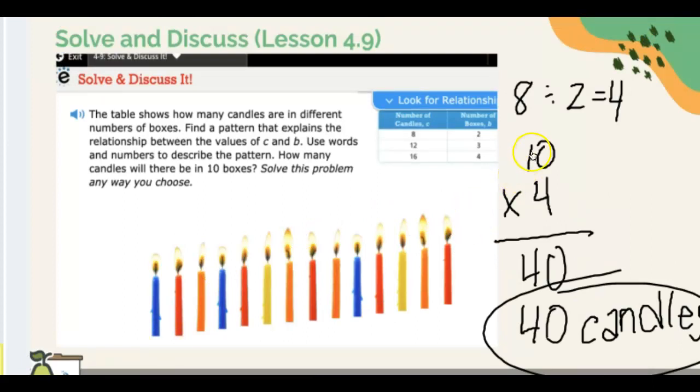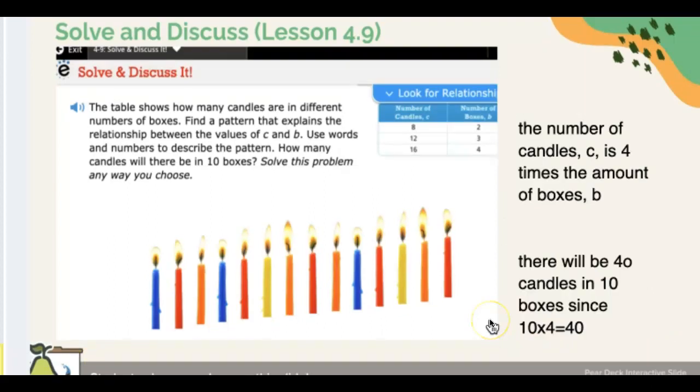In this case, Amy divided 8 and 2 to get 4 to identify how many are in each box. Now she multiplied 10 boxes by the number of candles in a box to get 40 candles in all. That's correct too.